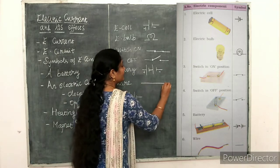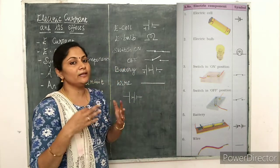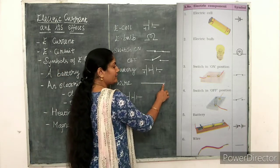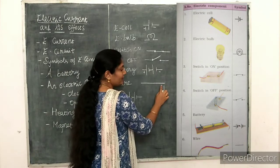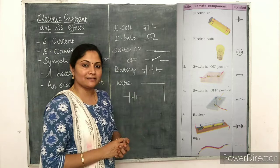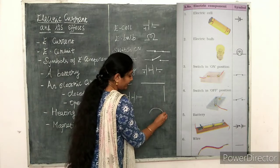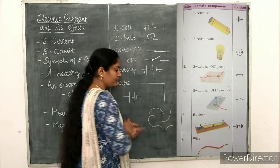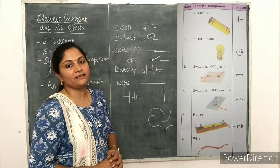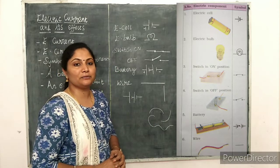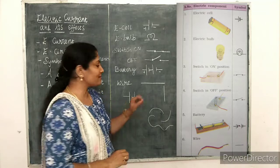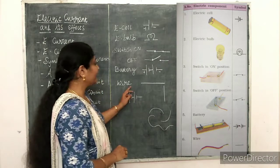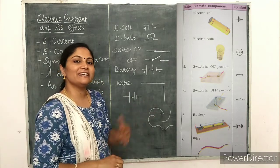Next is wire. Wire is very much essential for connecting the different electric components. It is denoted by horizontal straight lines or vertical straight lines. Curved lines should not be used to denote electric wires in electric circuits. So straight horizontal or vertical lines will be the symbol of a wire connection. These are all the simple components and their symbols.